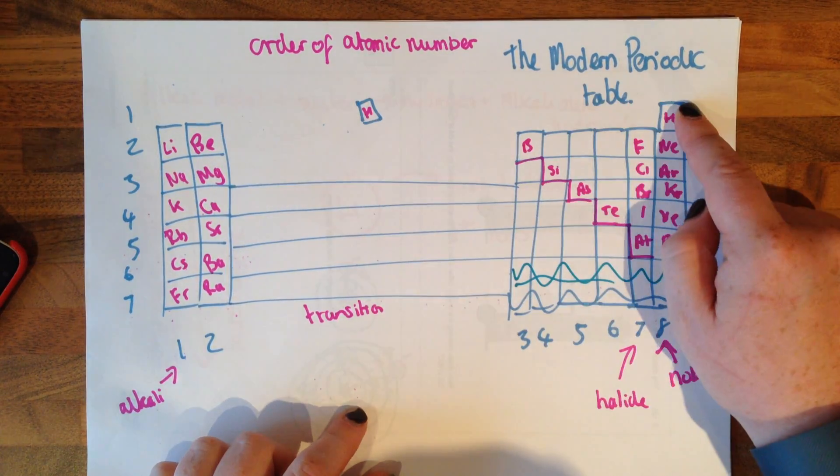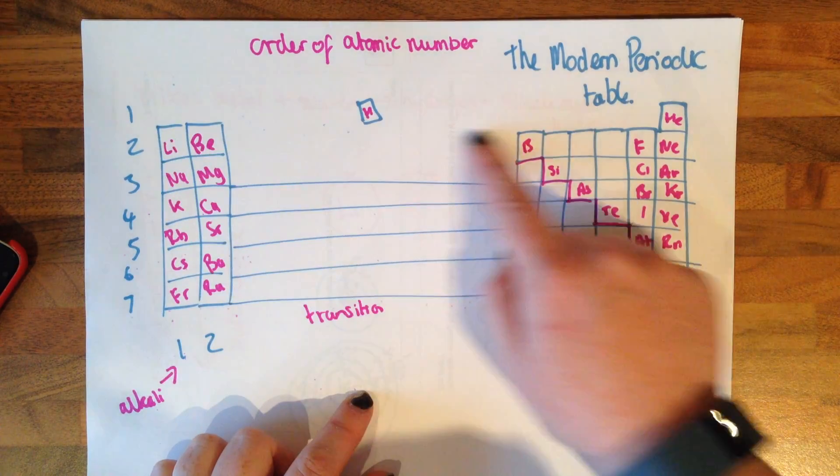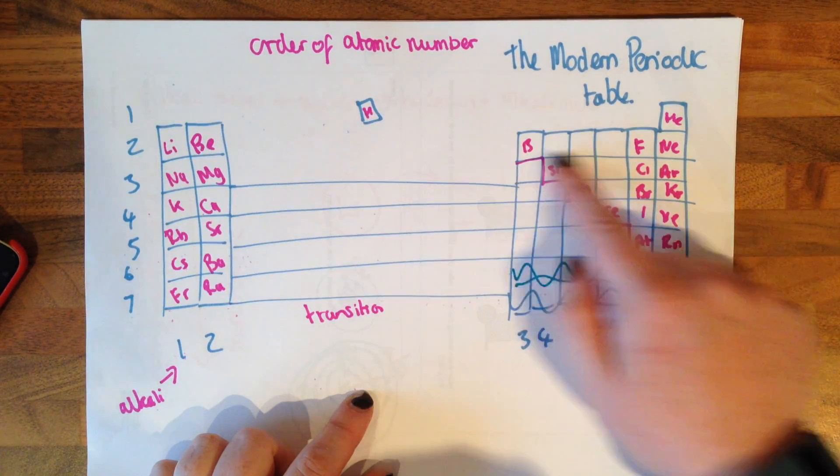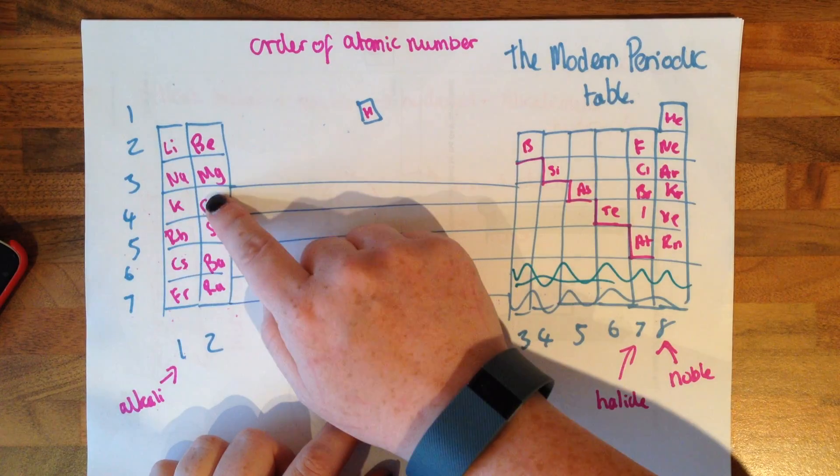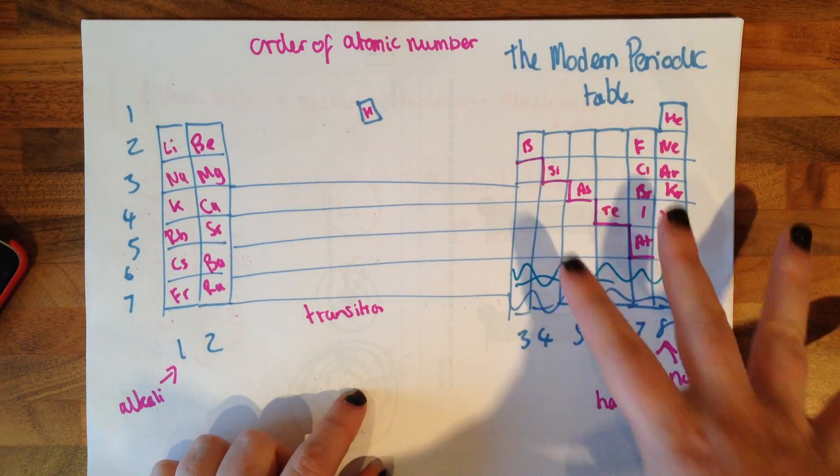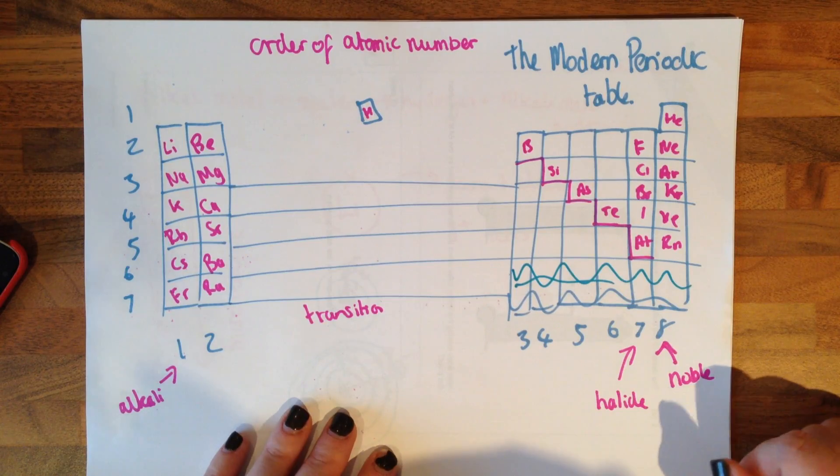So the first shell has two electrons. The second shell has eight electrons. The third shell has eight electrons. And you don't need to worry about up to calcium for GCSE. The rest gets really complicated. We do that at A-level.